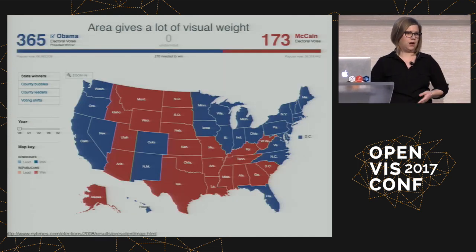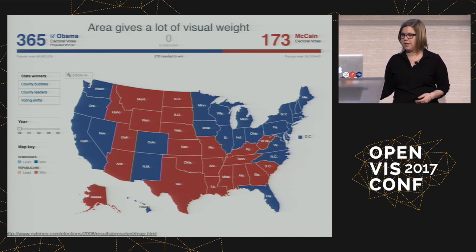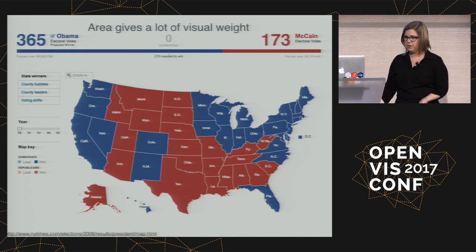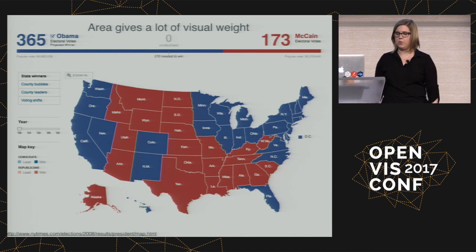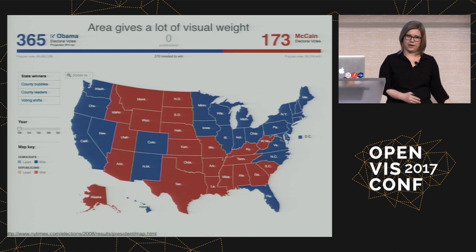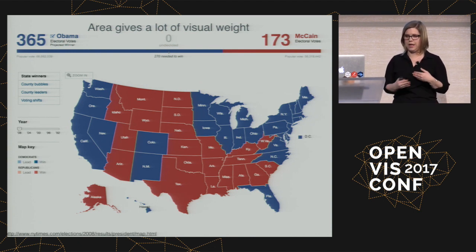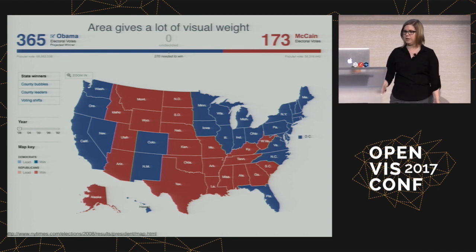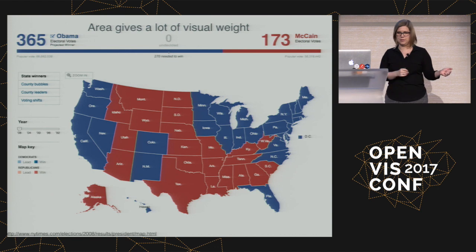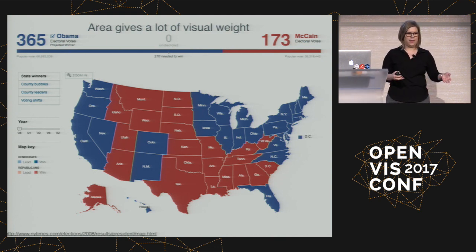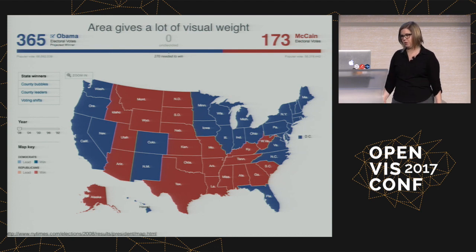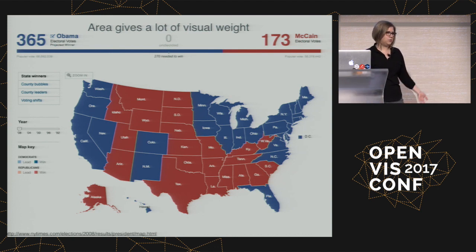The other problem, beyond absolute numbers and percentages, is that big areas give a lot of visual weight. This is the 2008 election map. When you look at it, the red polygons appear to be taking over — there's a lot more red area than blue area. But in that election, that's not the way things swung — the electoral count was heavily weighted toward the Democrats. The map from this year doesn't look that different, because you have these large red states giving a lot of visual weight.